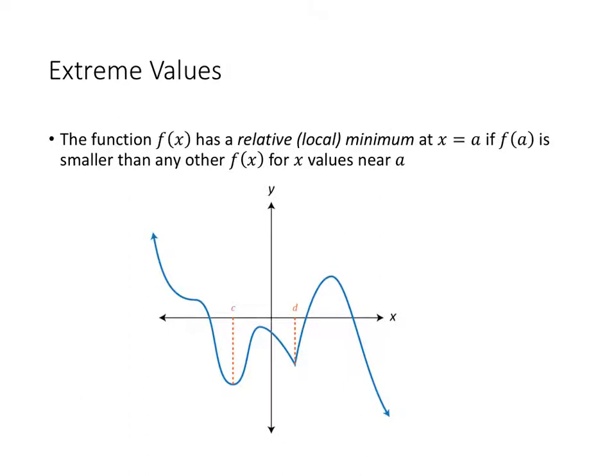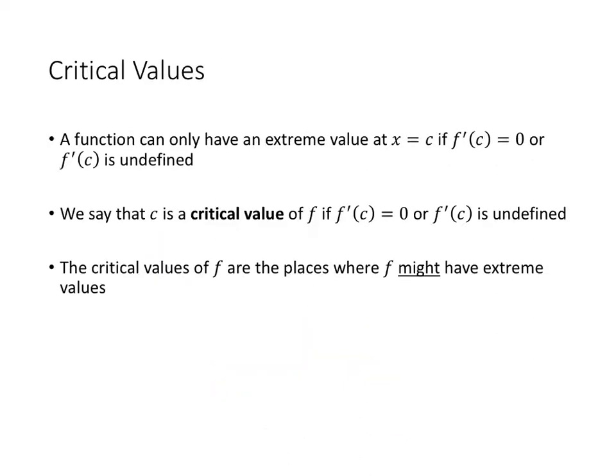Similarly, we can talk about a relative or local minimum of our function. A function has an extreme value if it's either a local maximum or a local minimum. That can only happen if the derivative of the function is 0 or if the derivative is undefined. We say that a value is a critical value if one of those two things happens — where the derivative is 0 or where the derivative is undefined. Those give us the places where we might have extreme values, sometimes called potential extreme values.